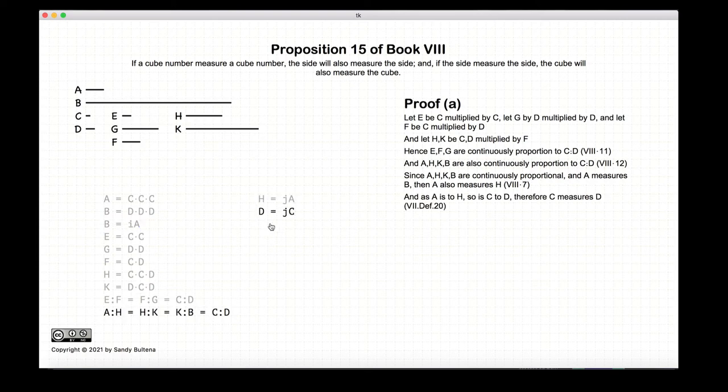And as a is to h, c is to d. So since a to h is equal to c to d, then if a measures h by a certain amount, c also measures d by the same amount.